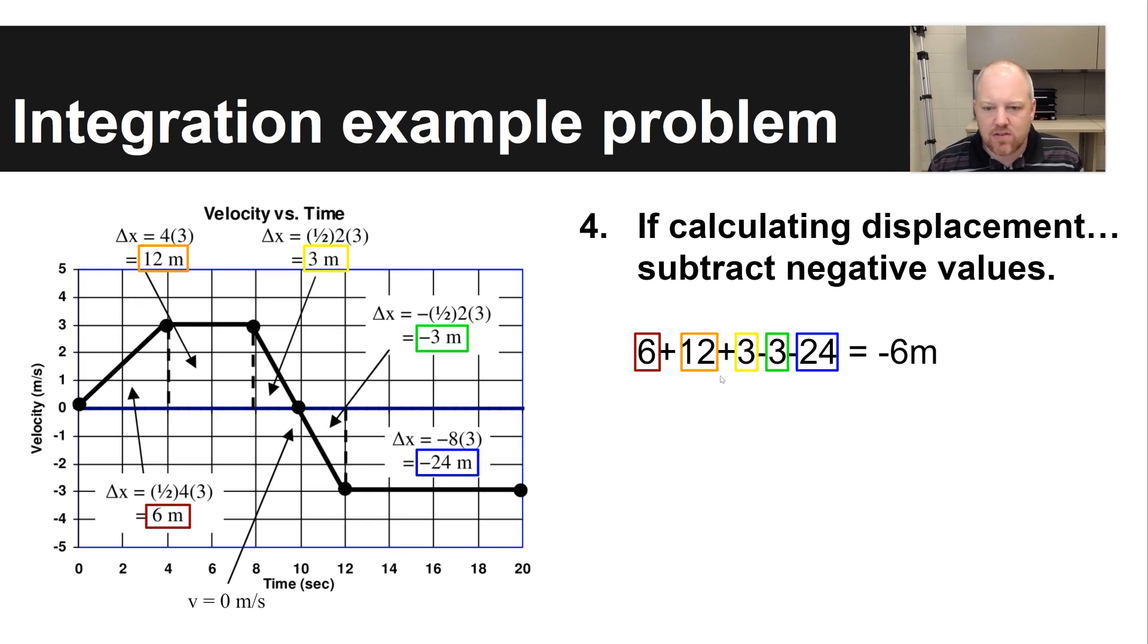So you take 6 plus 12 plus 3 minus 3 minus 24. And so for this circumstance, you have a total displacement of negative 6 meters.